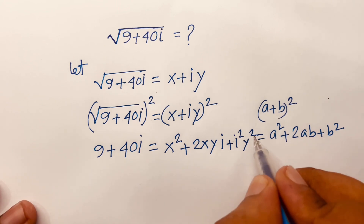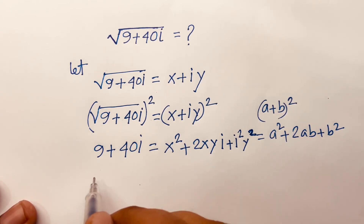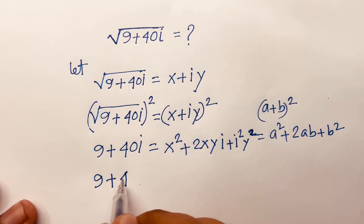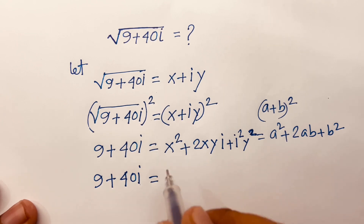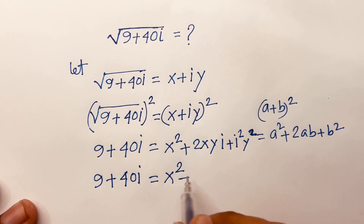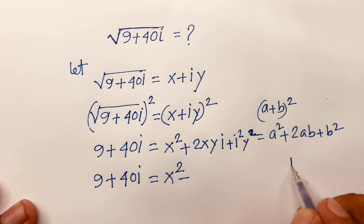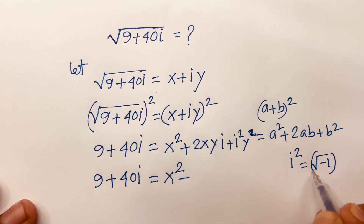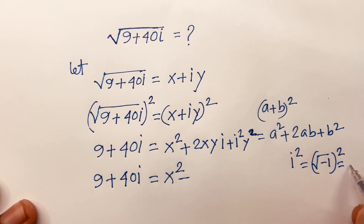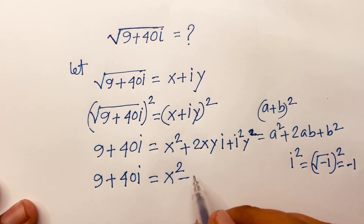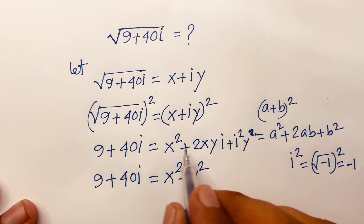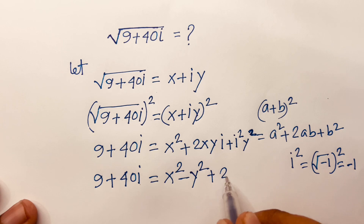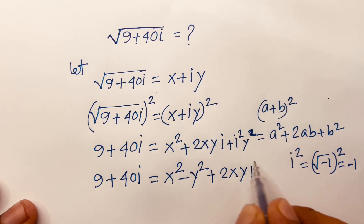Then I can say 9 plus 40i is equal to x² — look, i² is (√(-1))², the square root is cancelled, so we find out minus 1. So minus 1 times y² gives minus y², and here is plus 2xyi.